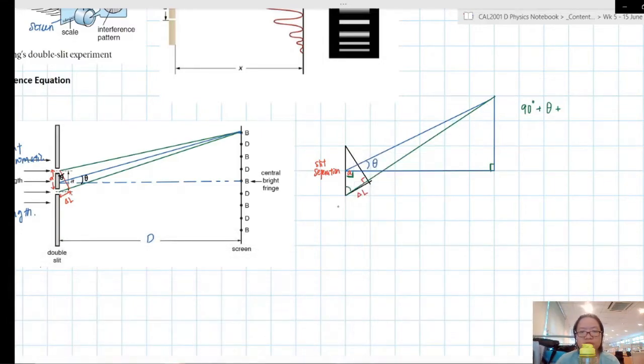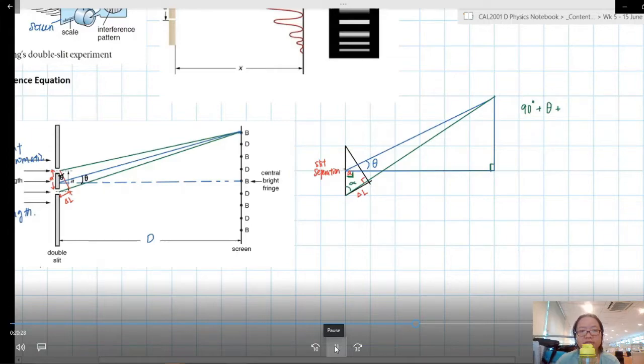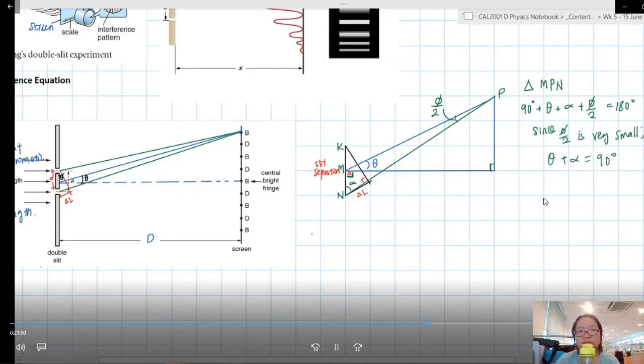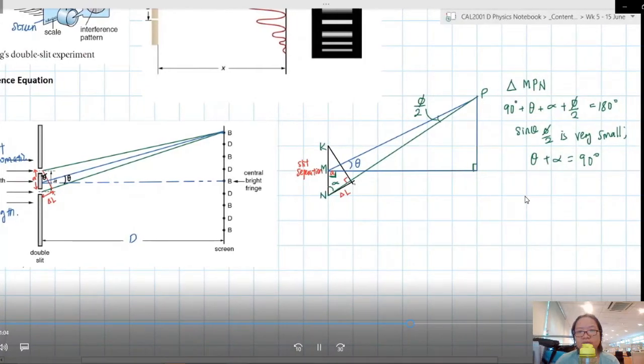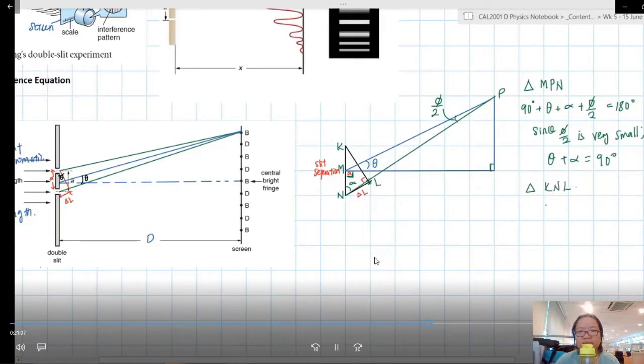Let's say this angle here is alpha. So you get 90 plus theta plus alpha plus this tiny angle, let's say psi over 2. You can call it whatever you want. Psi over 2 because I took this whole angle as psi. So let's say this is N, this is M, and this is K. So the triangle MDN, sum of the internal angles must be 180 since psi over 2 is very small. This means that theta plus alpha is equal to 90.